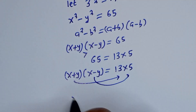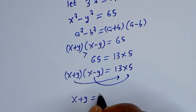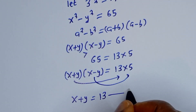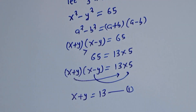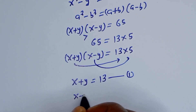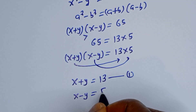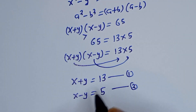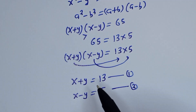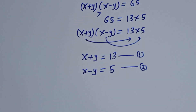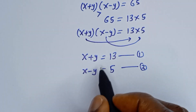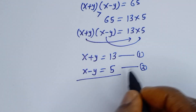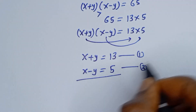Let's say x plus y is equal to 13 — call this equation 1. Then x minus y is equal to 5 — call this equation 2. We can solve these two equations together simultaneously using the elimination method.